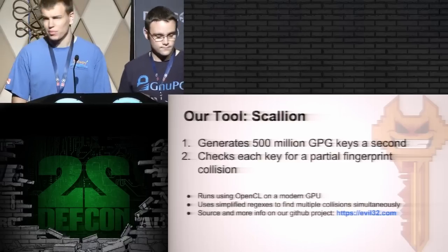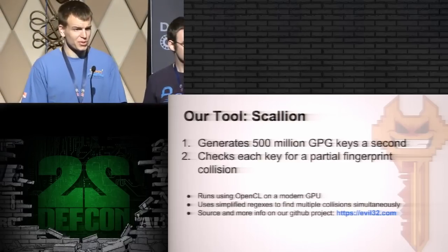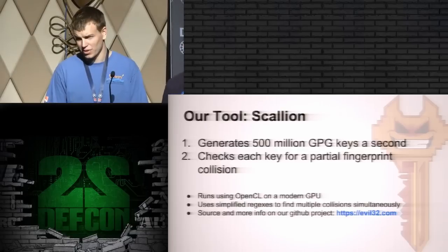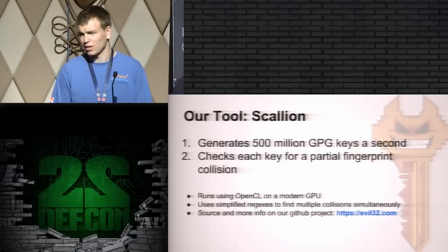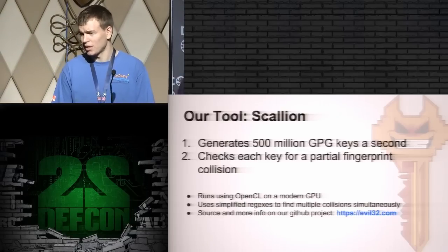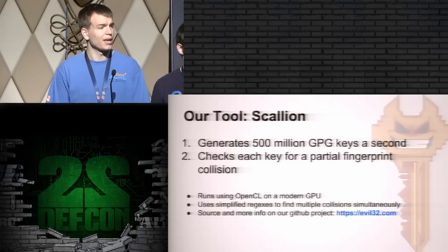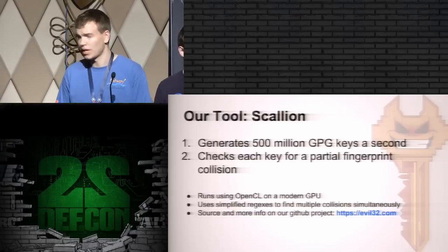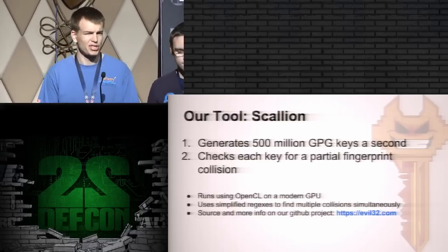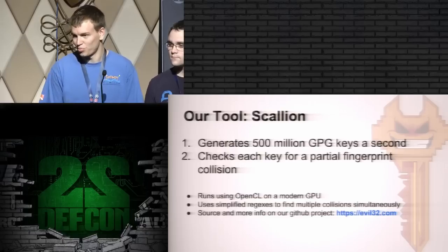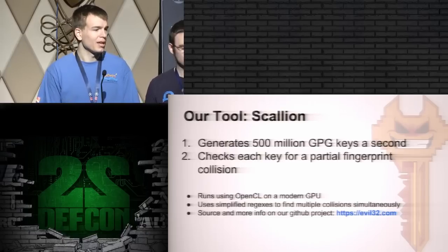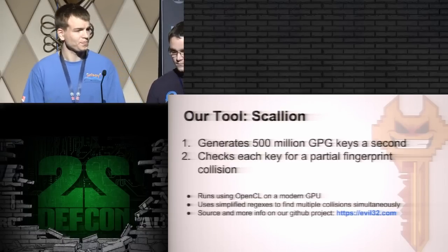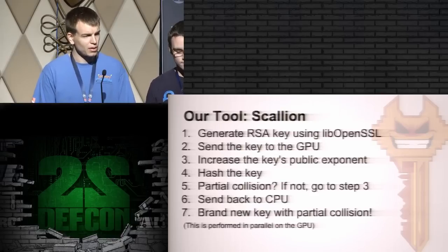For finding these fingerprint collisions and some of this fun stuff, we wrote a tool called Scallion. At a very high level, Scallion generates 500 million GPG keys a second on the GPU, and for each key it checks for partial fingerprint collisions. Scallion runs on any modern GPU — old Bitcoin hardware is prime — on OpenCL. You can grab the source and such at evil32.com.